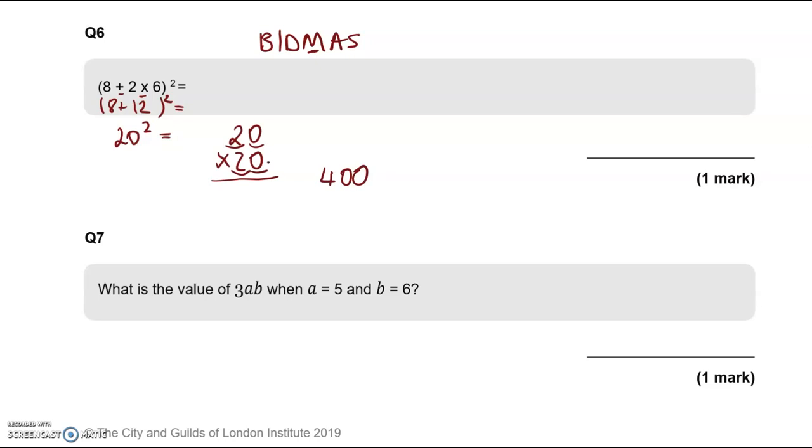So 20 squared means 20 times 20. You could do a column method, but I'll share a very quick method here. 2 times 2 is 4, add the 2 zeros. This is 400. If you use the column method, you go through the steps and that gives us again 400.